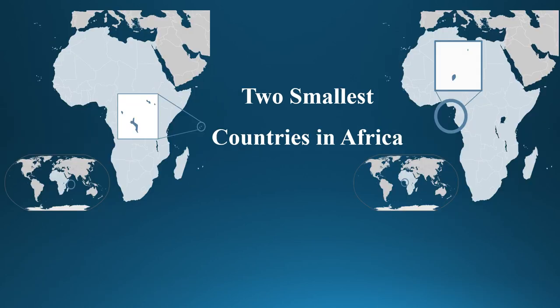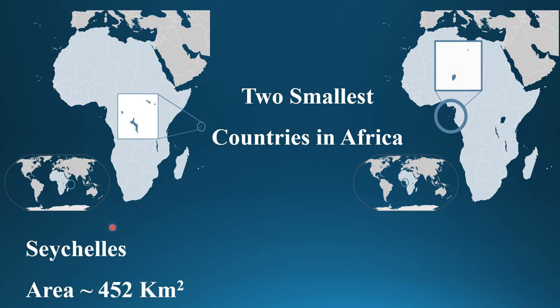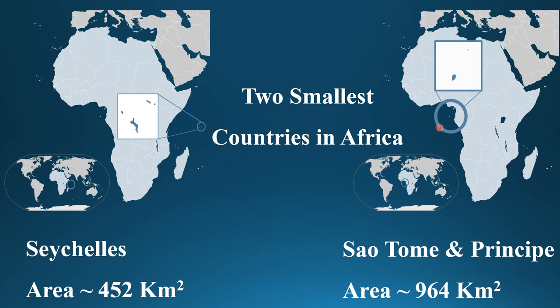The two smallest countries in Africa are both island nations. The first smallest country is Seychelles, an island in the Indian Ocean, with a total area of 452 square kilometers. The second smallest country in Africa is São Tomé and Príncipe, an island in the Atlantic Ocean, with a total area of 964 square kilometers.